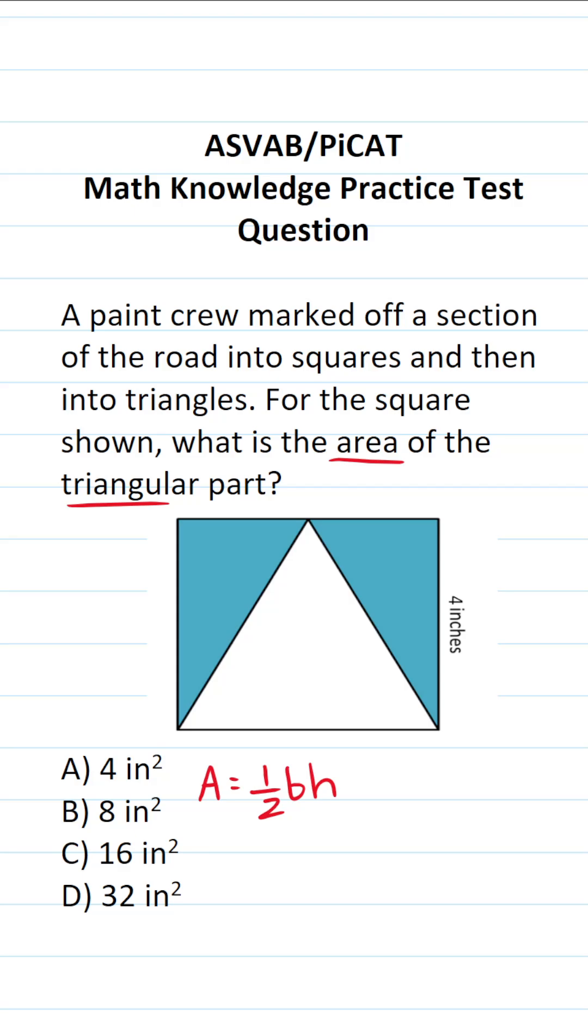Now we have to use some information that we know about squares and triangles to fill in this formula accordingly. We know that this square has a side length of four inches, and you should know that one property of squares is that all the sides are equal. In other words, if this side's four inches, this side's also going to be four inches, this side's also going to be four inches, and this side's also going to be four inches.